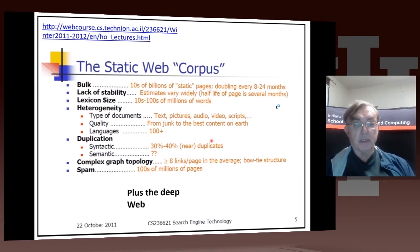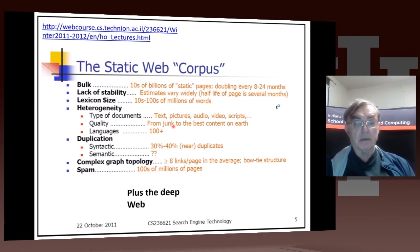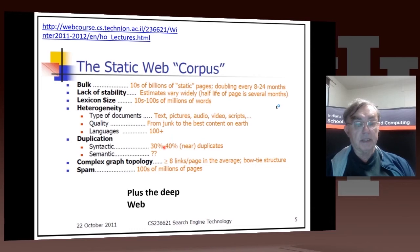You have all sorts of information: text, pictures, audio, video, JavaScript, and so on. The quality varies from truly wonderful — such as some of the best Wikipedia articles — to total nonsense, and all this is done in many languages. There's lots of duplication: content that is syntactically the same, or things that are syntactically different but actually mean the same thing.